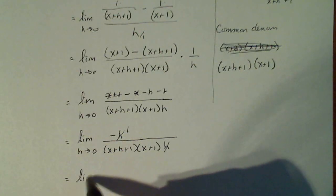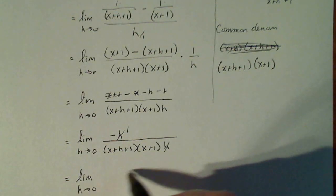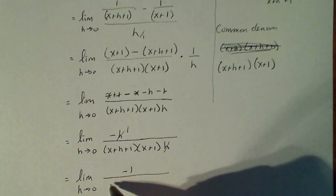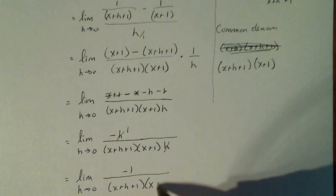So limit as h goes to zero of -1 divided by (x+h+1) times (x+1).